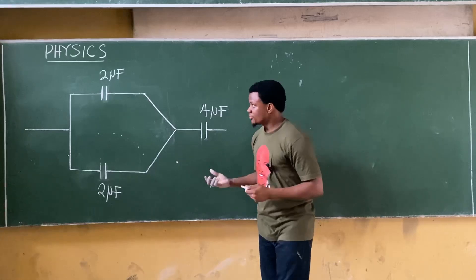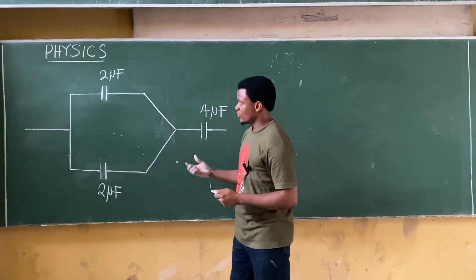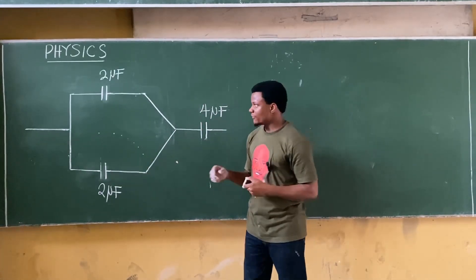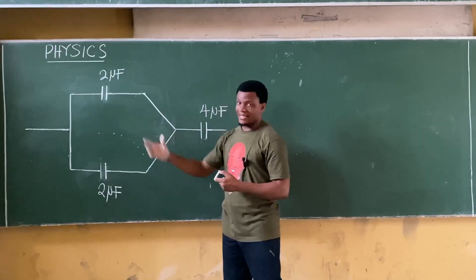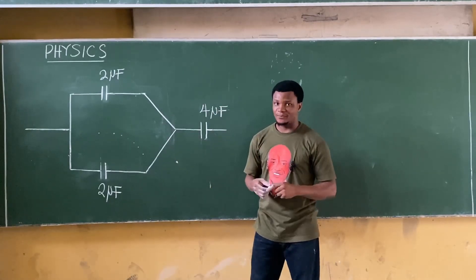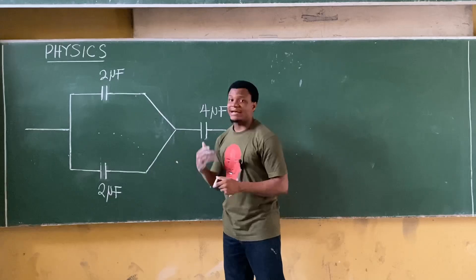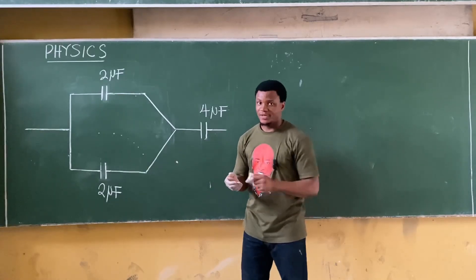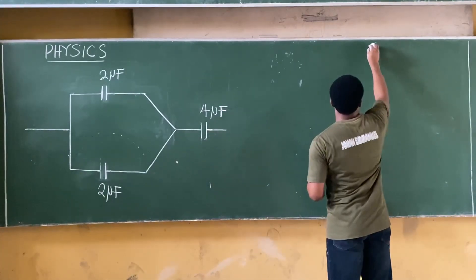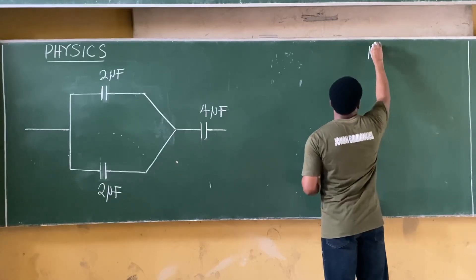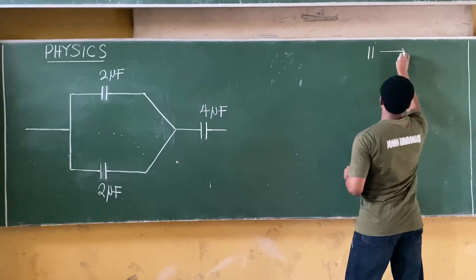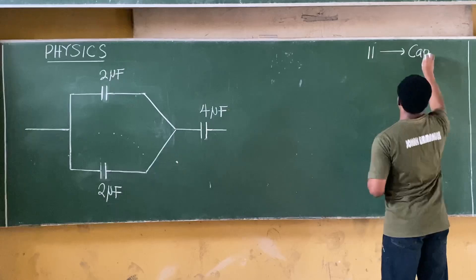In this video I will show you how to resolve a problem like this, where we need to find the equivalent capacitance of a particular connection. First, you have to identify the circuit elements. When you have two bars of the same height in a circuit, this is the second symbol for a capacitor.